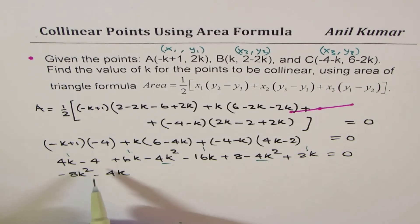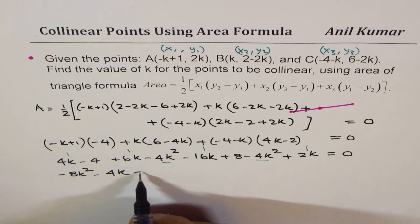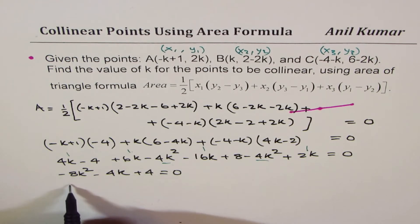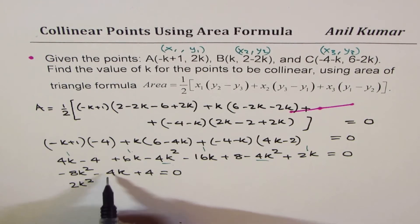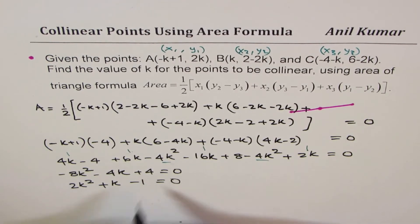The constants -4+8 is plus 4 equals to 0. You can divide by -4, simplify this. So we get 2k²+, we are dividing by -4, so we get plus k-1 equal to 0. So that is the quadratic equation.